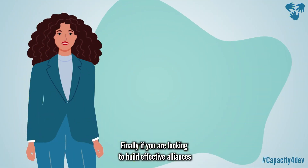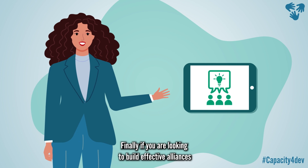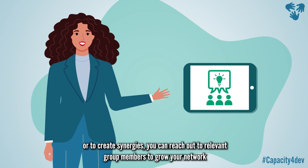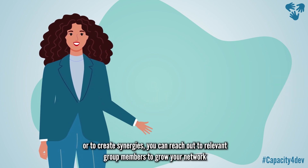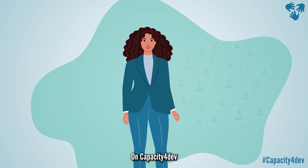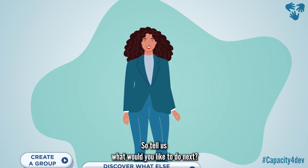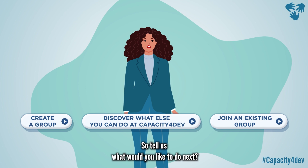Finally, if you are looking to build effective alliances or to create synergies, you can reach out to relevant group members to grow your network. On Capacity for Dev, you decide. So tell us, what would you like to do next?